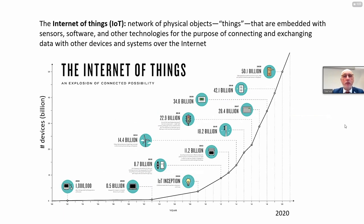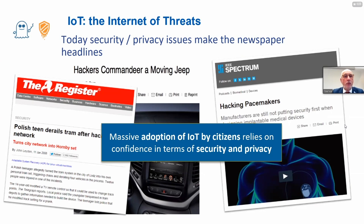The Internet of Things is the network of physical objects or things embedded with sensors, software, and other technologies for the purpose of connecting and exchanging data with other devices and systems over the internet. Here you see a very impressive and dramatic increase in the number of devices connected to the internet. IoT — some people also say the 'internet of stress.'